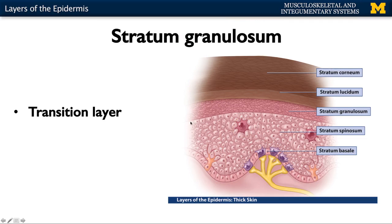The intermediate layer in thick skin is the stratum granulosum, and this is a very important area because it is the transition layer. Some of the cells in this layer are alive, whereas some are undergoing apoptosis, or programmed cell death. So you can have both alive and dead cells in the granulosum.